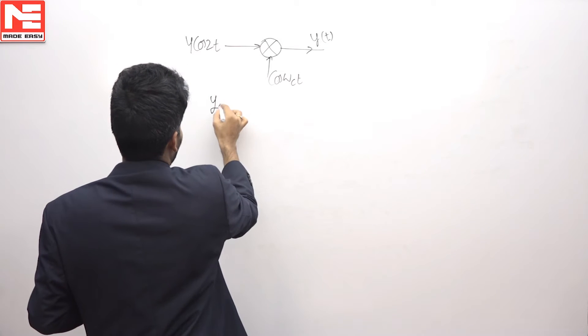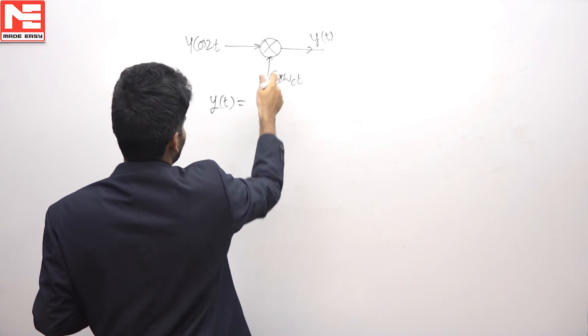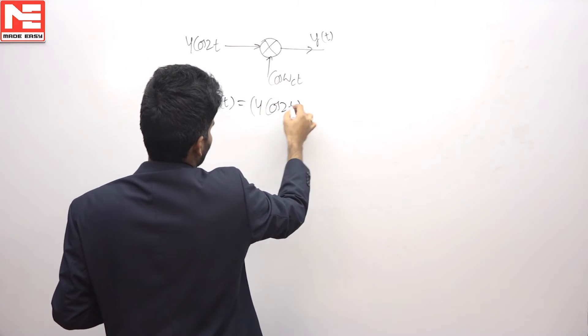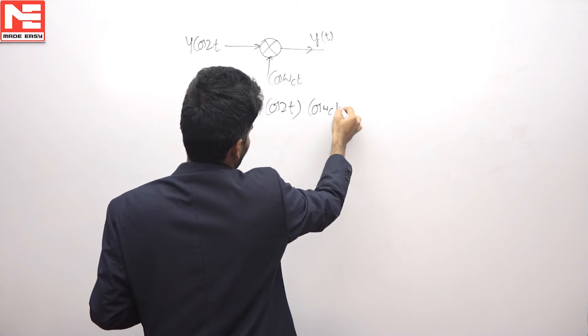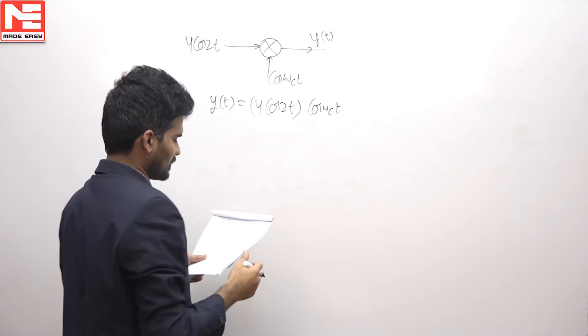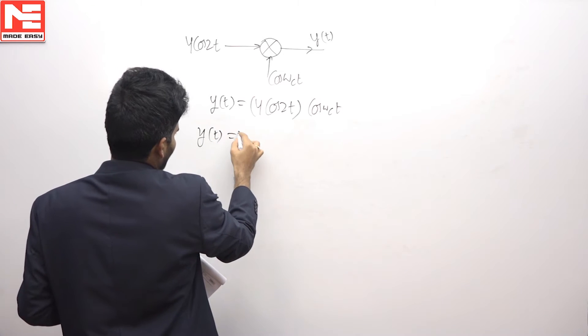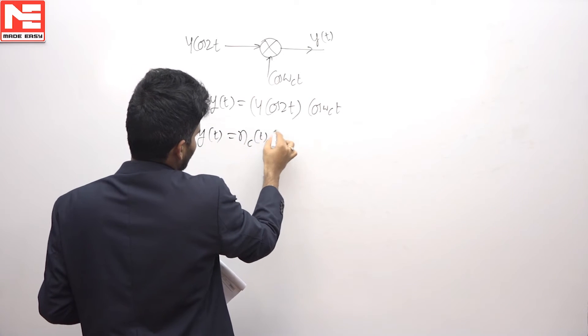So here y(t) equals the multiplication of these two signals: 4 cos 2t into cos ωct. This bandpass signal can be represented in the form of nc(t) cos ωct.